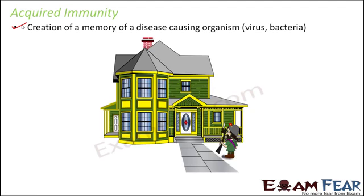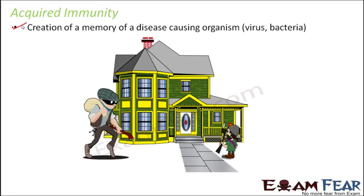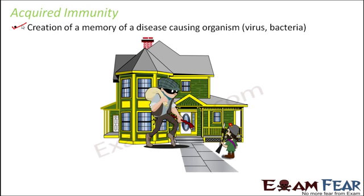Let us take the example of a house, security guards, and a thief — where the house is your body, security guards are the immune system, and the thief is the disease-causing organism. Let us suppose a thief attacks the house for the first time. The thief is really powerful and there was just one security guard to protect the house, who was not strong enough.